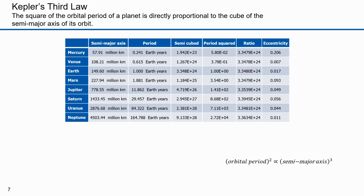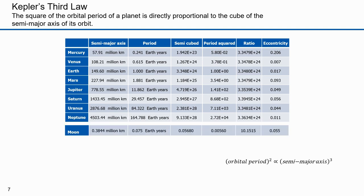The ratio — 3.3 times 10 to the 24th — is only good for planets orbiting the Sun. Here are the parameters for the Moon. The Moon orbits the Earth, so its semi-major axis and period are in relation to the Earth. Look at the ratio column — it's just over 10, a much different value than for planets orbiting the Sun. Kepler's third law states that the square of the orbital period is directly proportional to the cube of the semi-major axis, but that only holds for a common central body. Satellites orbiting the Earth would have a ratio of 10.1515, and another central body — for instance, the moons of Jupiter — would use a different constant of proportionality.